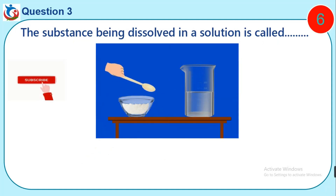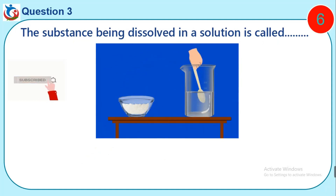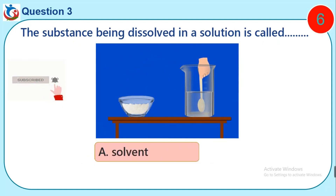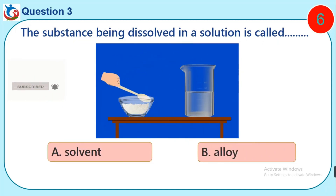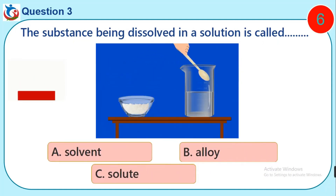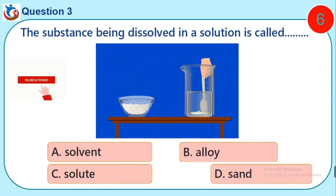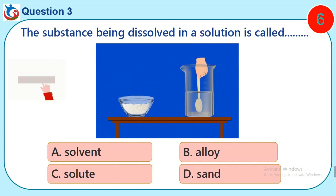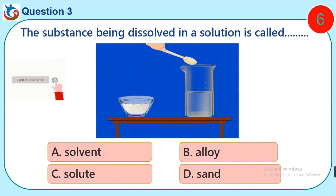Question 3. The substance being dissolved in a solution is called what? A. Solvent. B. Alloy. C. Solute. D. Sand.